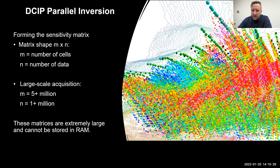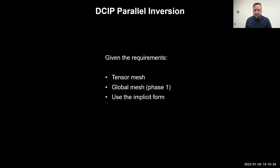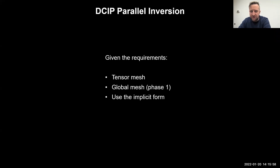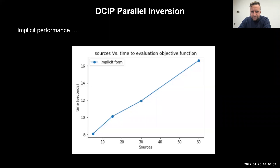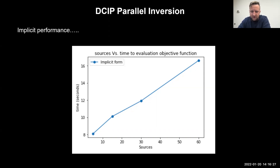Let's try throwing some models and inversions at this, starting with the tensor mesh. Using a global mesh, we can see the effect of using the implicit form by just breaking up the for loop into chunks. Looking at the implicit performance, we're getting a linear speedup, but it's only about two times — going from 60 sources per tile to about five. So we're getting some speedup, but it's not totally dependent on the source count alone.